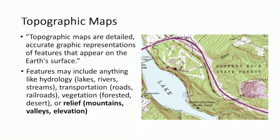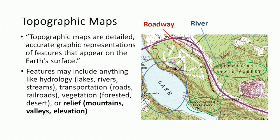For example, the United States Geological Survey map on the right includes hydrological features like lakes and rivers, as well as roadways, state parks, and elevation contours.